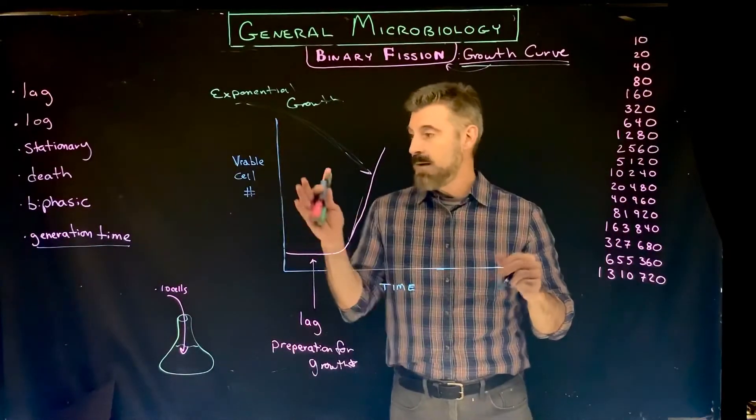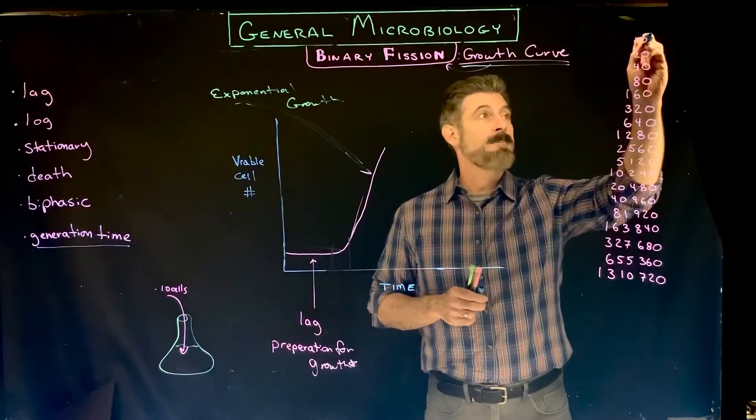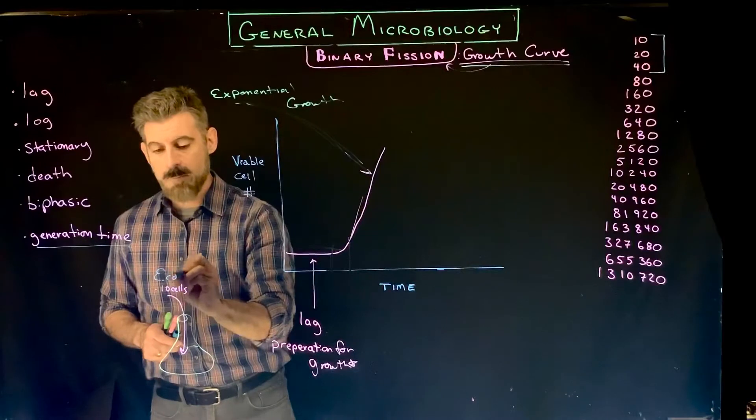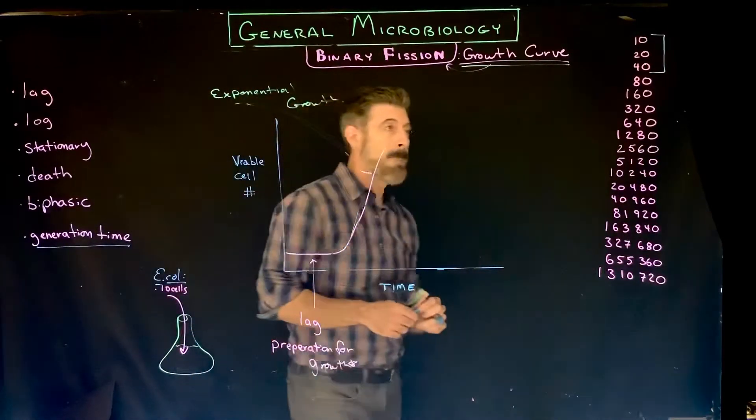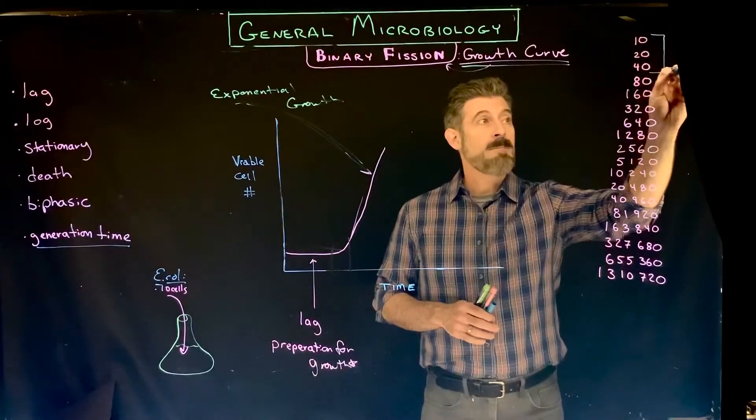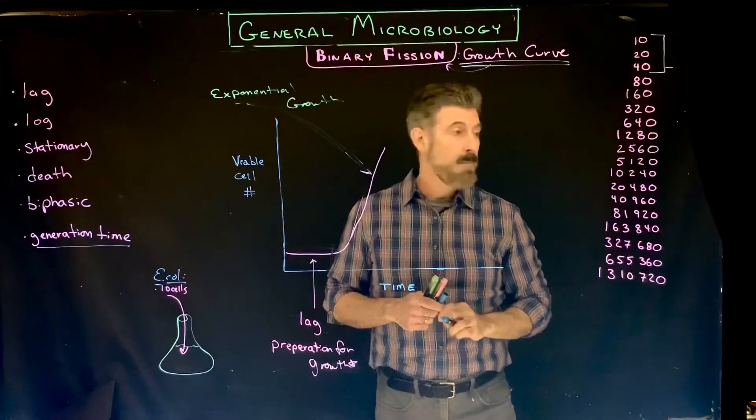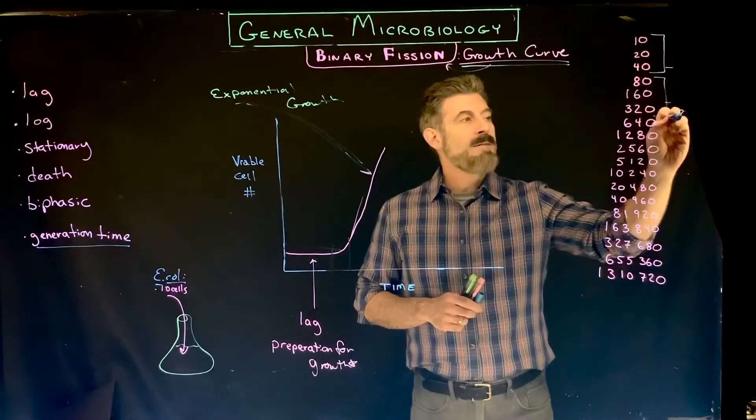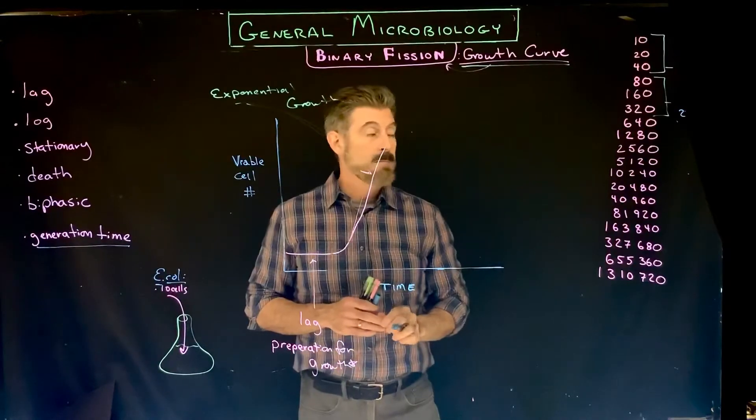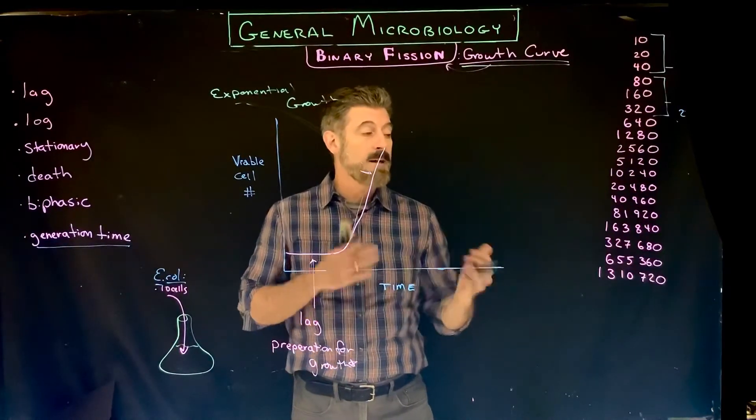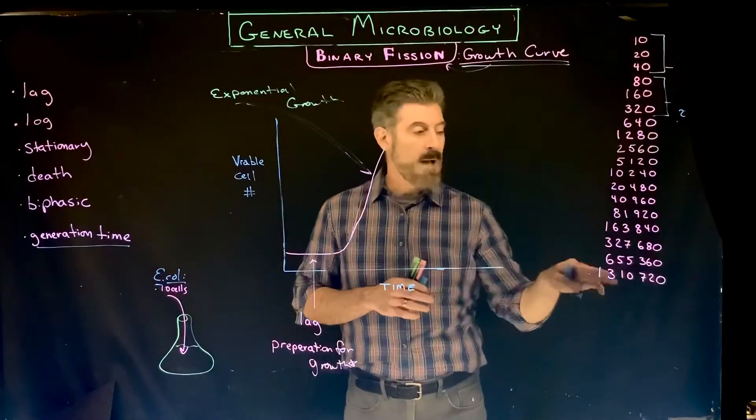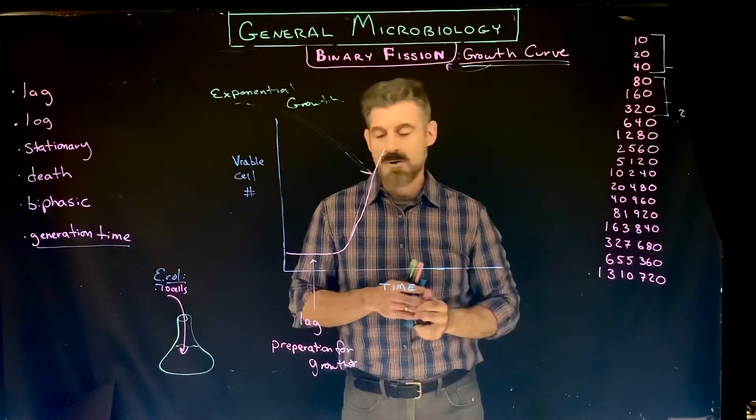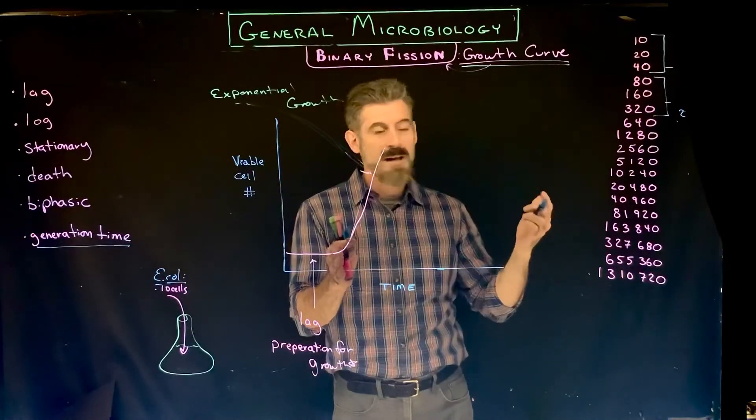Let's use the example of E. coli that has a generation time of 20 minutes. That means there would be three divisions roughly in an hour. If we started off with 10 cells of E. coli in this culture, at the end of the first hour we'd have 40 cells. More, but not a lot, not significantly more. At the end of the second hour we now have 320. Still quite a bit more, but comparatively we're going to end up with over a million cells. After two hours we don't even have a thousand cells, we have 300 cells, very small number. The first two hours you're going from 10 to 300 cells.